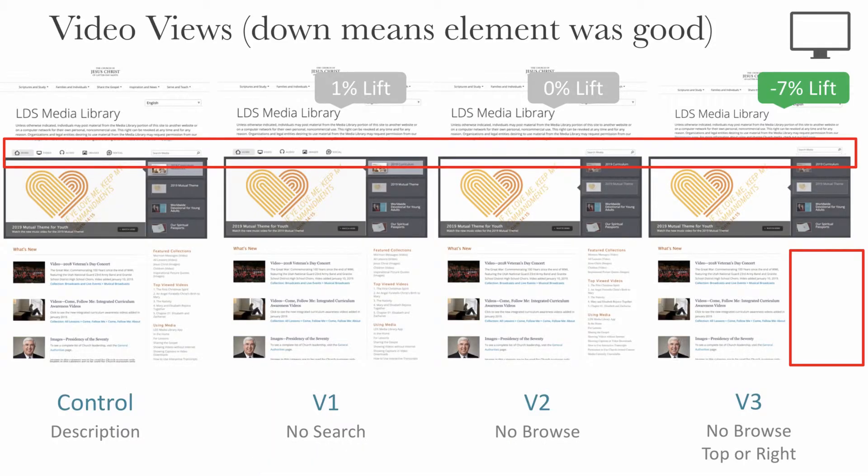And the results are so interesting. You can see here the variations one and two had almost no impact on the visitor experience. By removing browse and removing search, the visitor was just fine. Those elements aren't as important by themselves. You also see that in version three, there was a negative 7% decrease in the goal we were measuring. So you know that that bottom right browse was the most important element. It was more important than the browse and more important than the search.